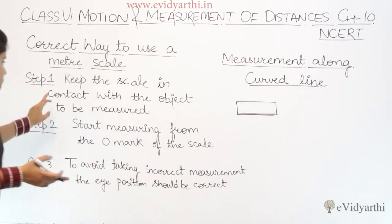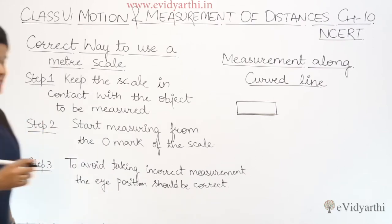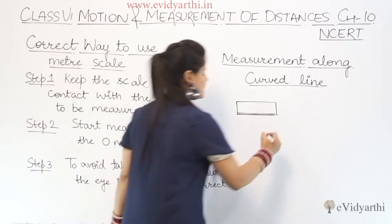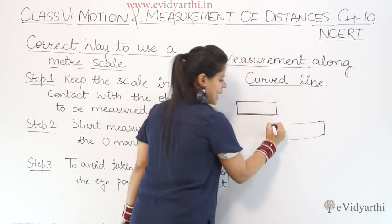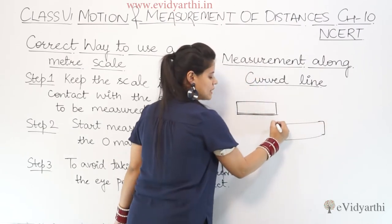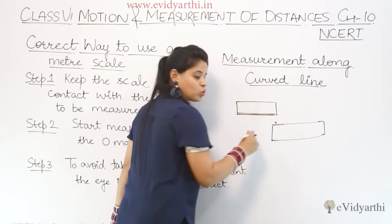Step 2: start measuring from the 0 mark of the scale. You can see that there is some space before the scale begins, so make sure to align from the 0 mark and then start measuring.